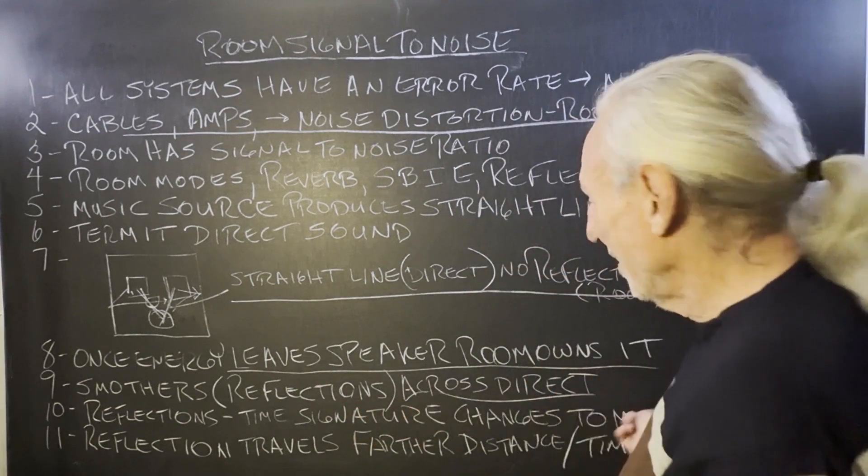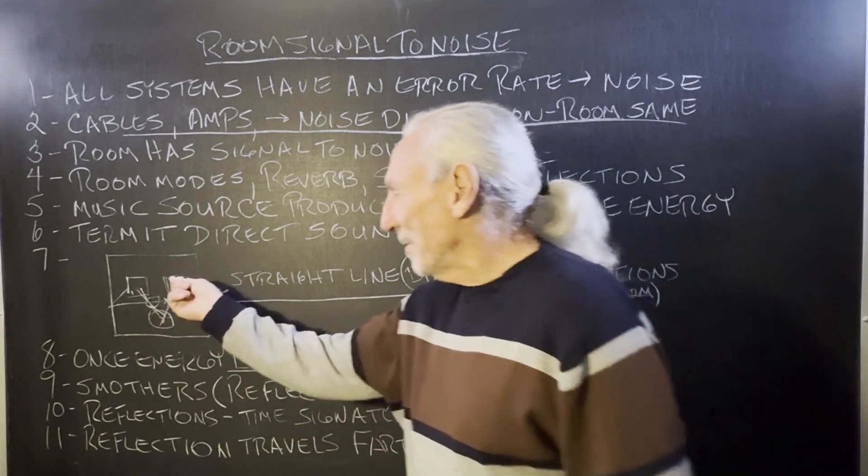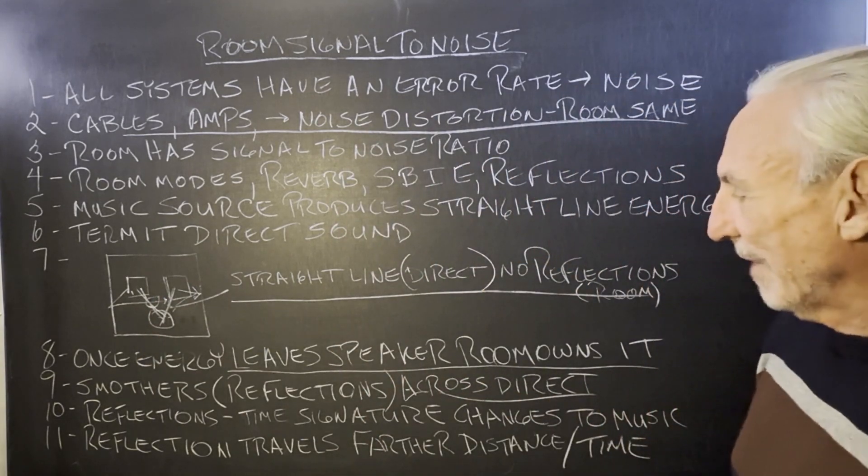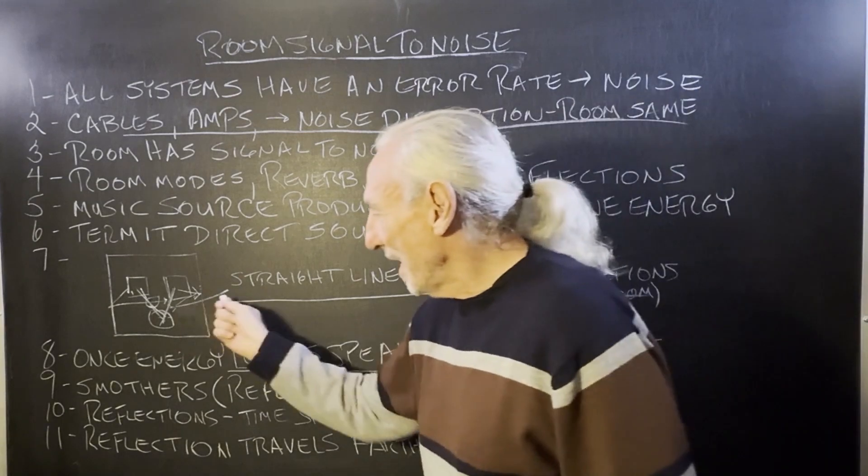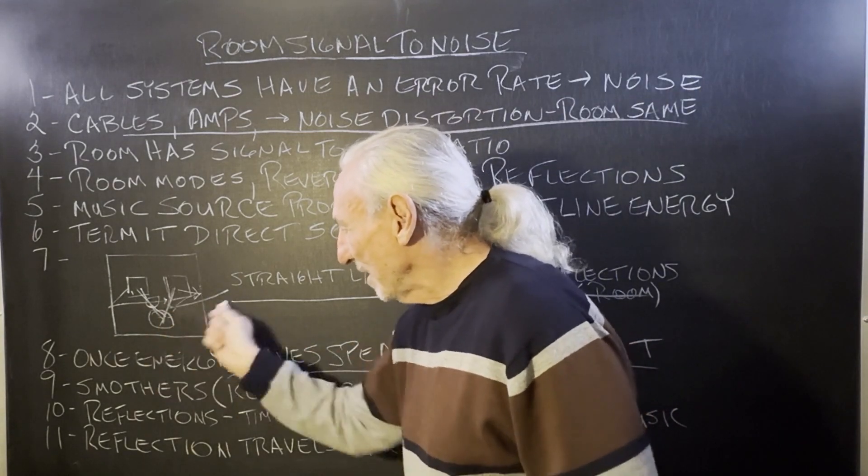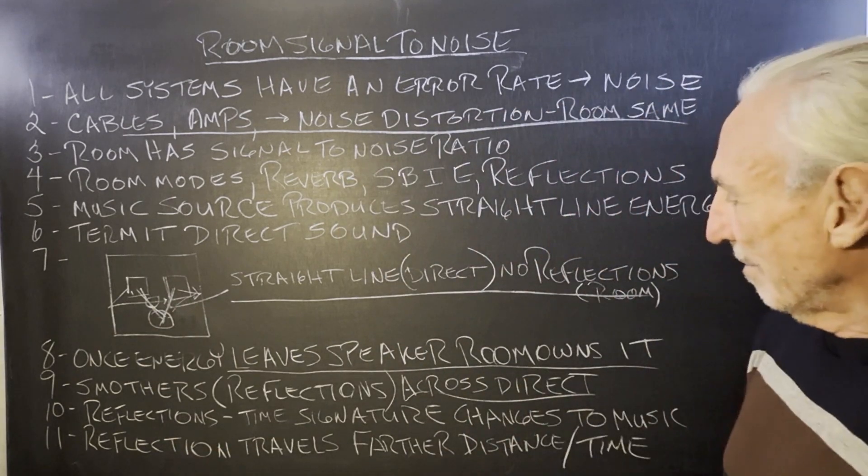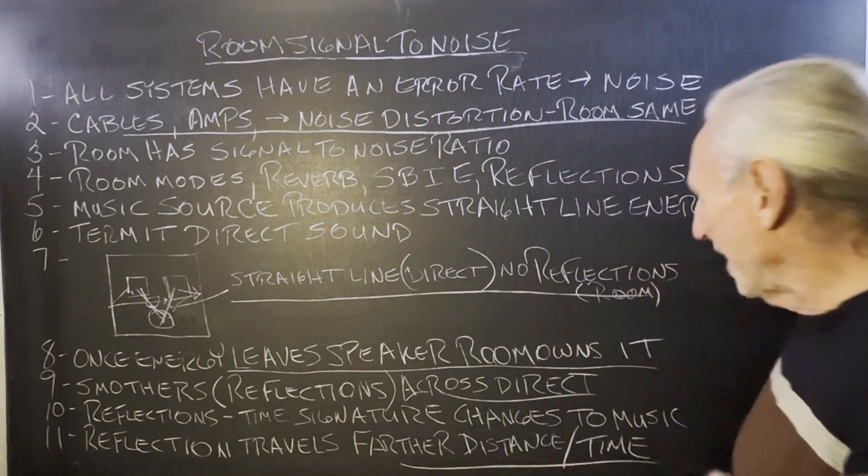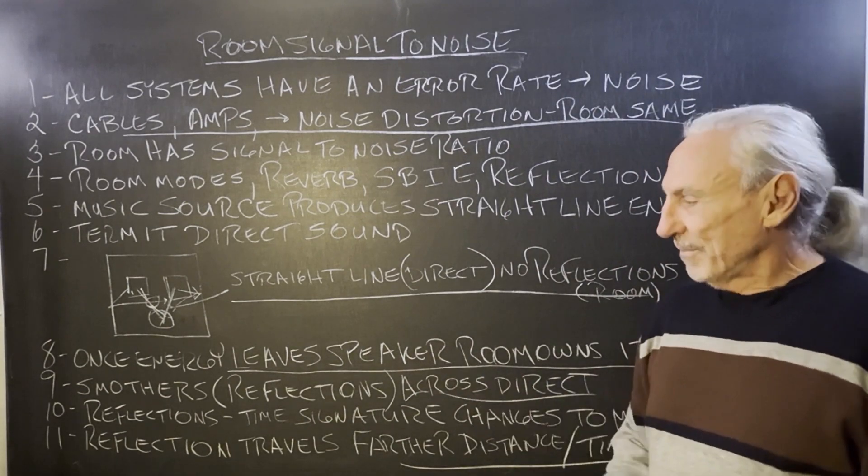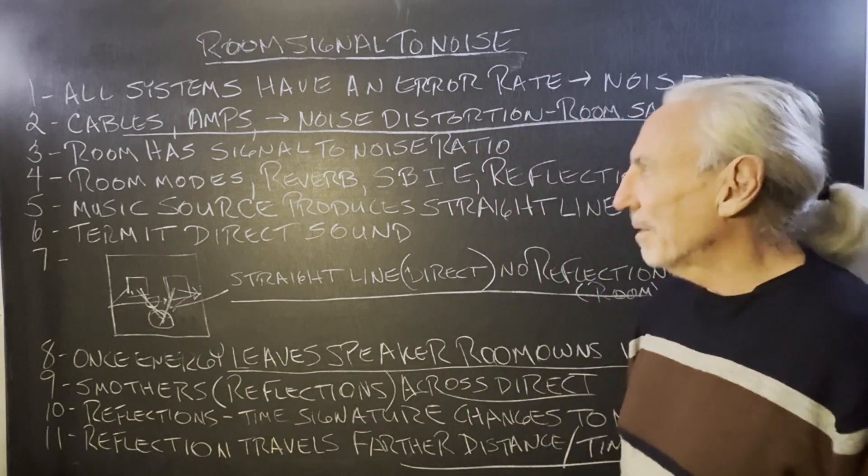Once energy leaves the speaker, it becomes the room domain. The reflections smother across the direct sound. This could be a speaker on stage, you're in the audience. It can be a lot of different situations. So reflection time signatures, they change, right? Because they got to travel farther. This goes straight. These got to go like this. So more time and stuff. Reflection travel farther distance. That's where you get that time signature delay. And you want to keep all of this in a certain time window.